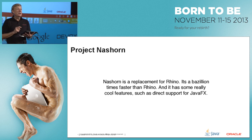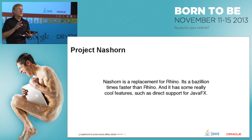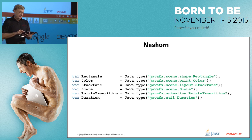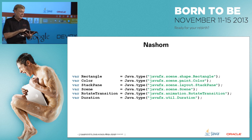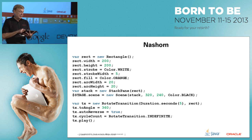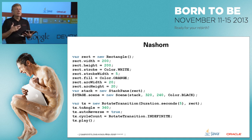The next topic is Project Nashorn — a JavaScript engine that runs on top of the JVM, much faster than the old Rhino engine. It has great support for JavaFX. Here we're using JavaScript: creating instances of JavaFX objects, setting their attributes — under the covers it calls the setters and getters. We create a new Rectangle, set some attributes, put it in a StackPane container, and create a RotateTransition, which rotates a node over time rather than translating it.